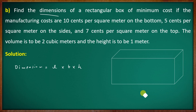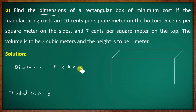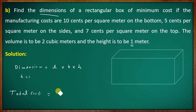For the rectangular box, the total cost formula is set up. Height h = 1 meter. The base cost is 10 × L × B.